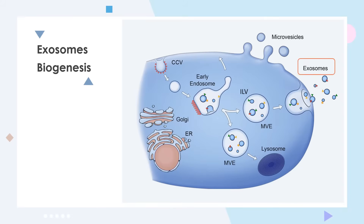The vesicles formed through outward sprouting of the plasma membrane are called microvesicles. Exosomes are vesicles of endocytic origin. The invasion of the plasma membrane inward forms the early endosome, and the limiting membrane of the later endosome sprouts further to form small vesicles, leading to the formation of multivesicular bodies, or MVB.